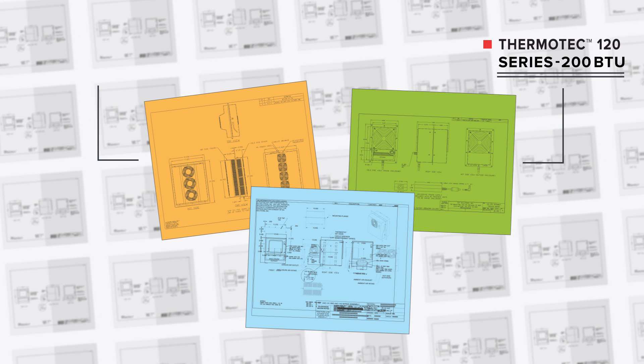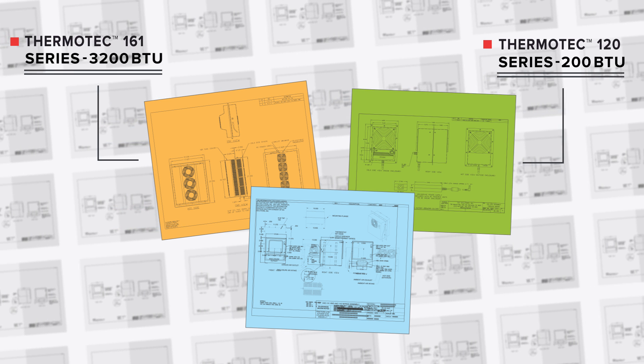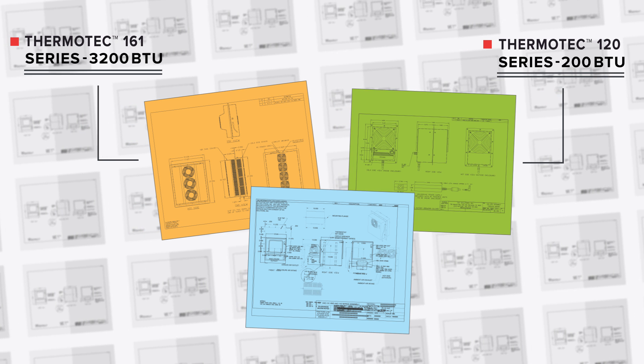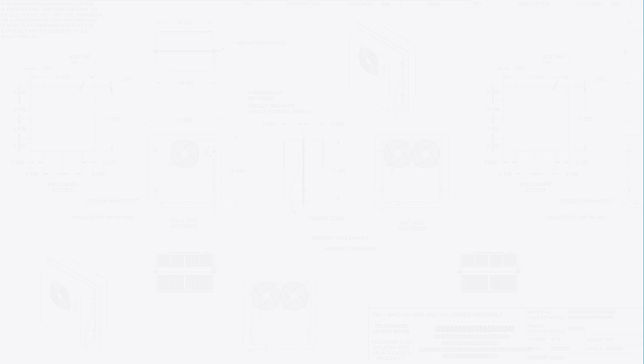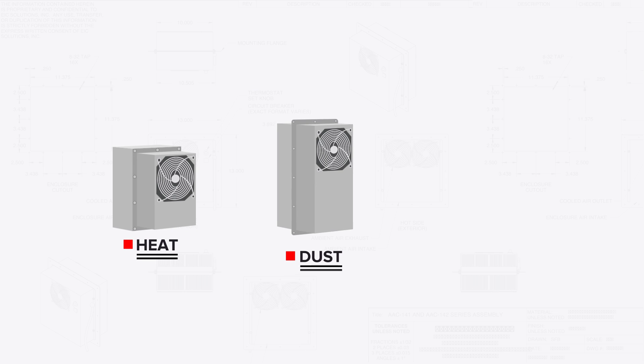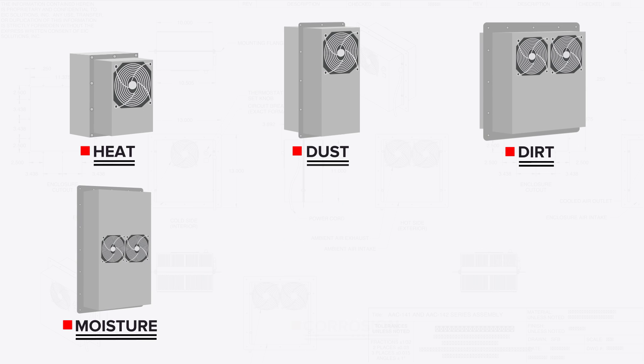Ranging from 200 to 3200 plus BTU, our reliable air conditioners, enclosures, and transit cases are built to protect your systems from heat, dust, dirt, moisture, corrosion, and vibration.